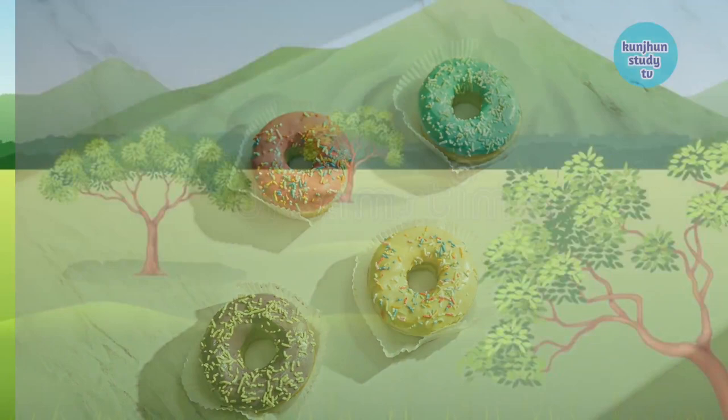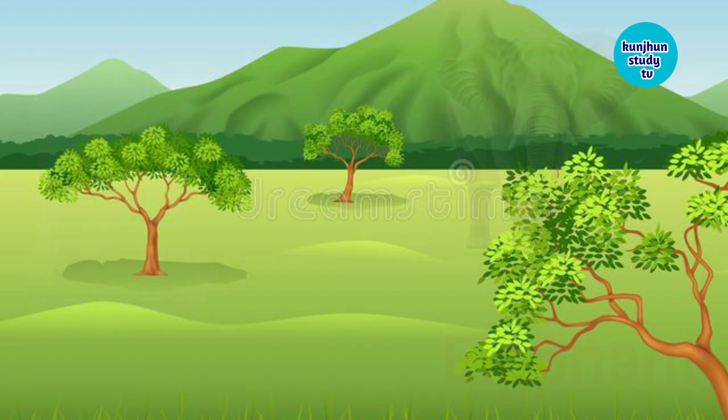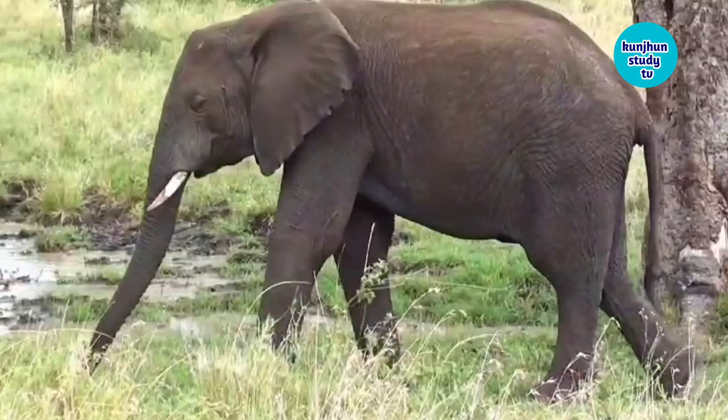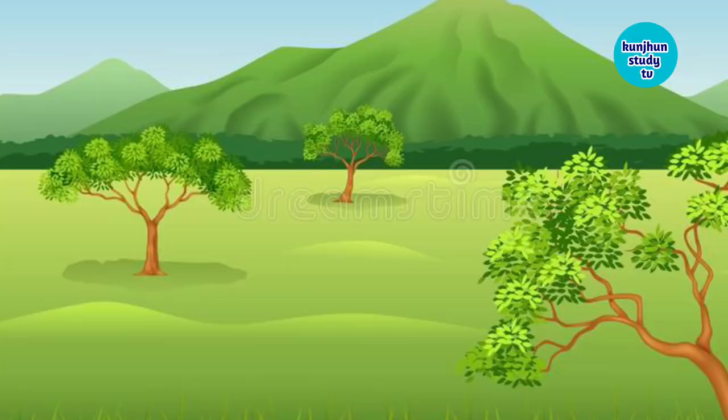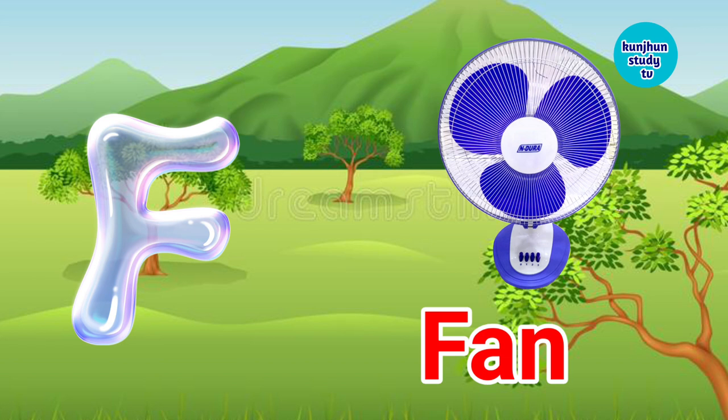E. E for elephant. Elephant means haathi. F. F for fan. Fan means pankha.